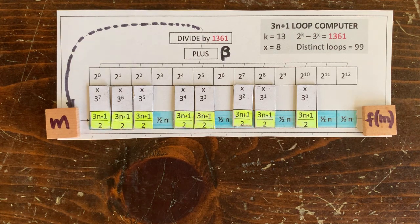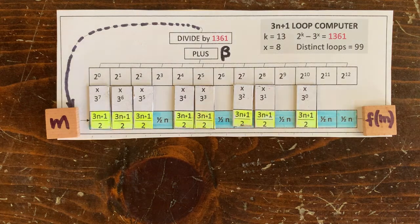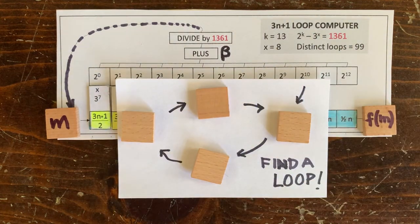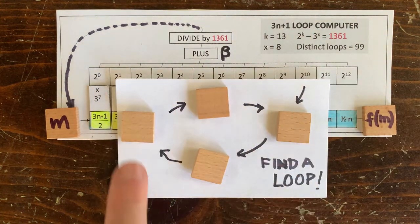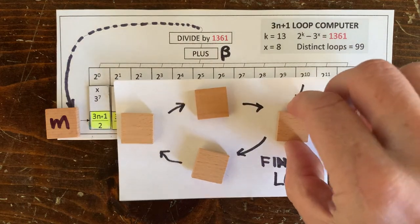Greetings. I've mentioned a few times on this channel how any non-trivial 3n plus 1 loop would have to have at least 10 million members, but we've never gone into why that is.